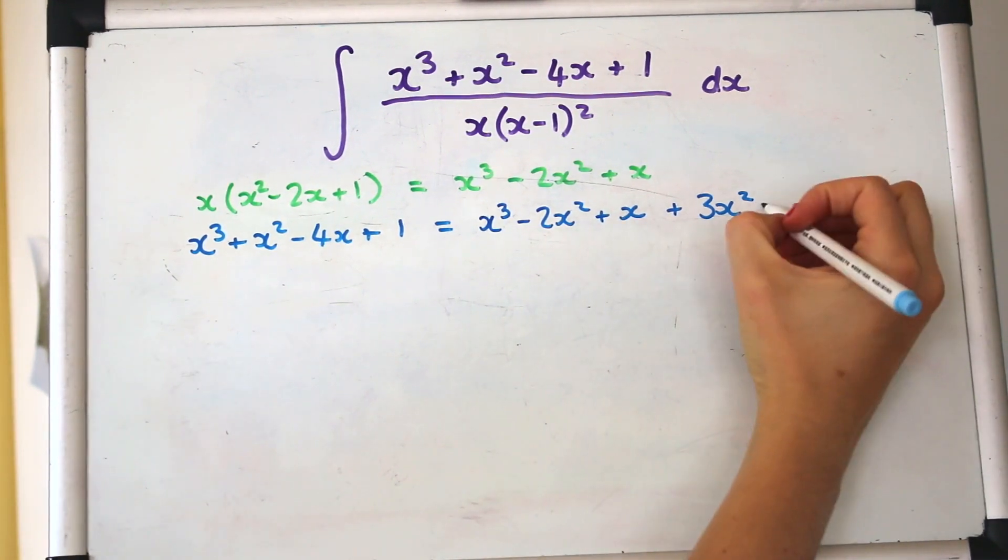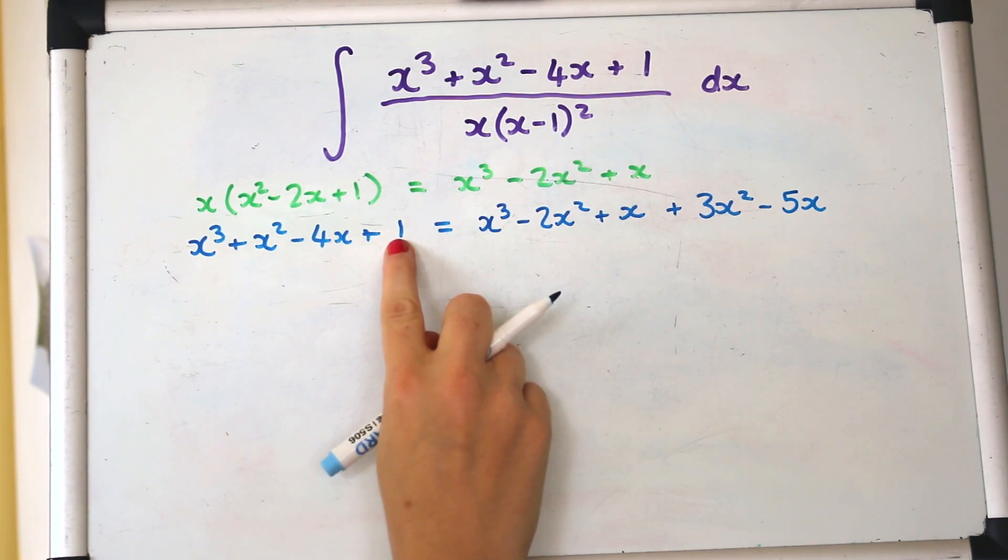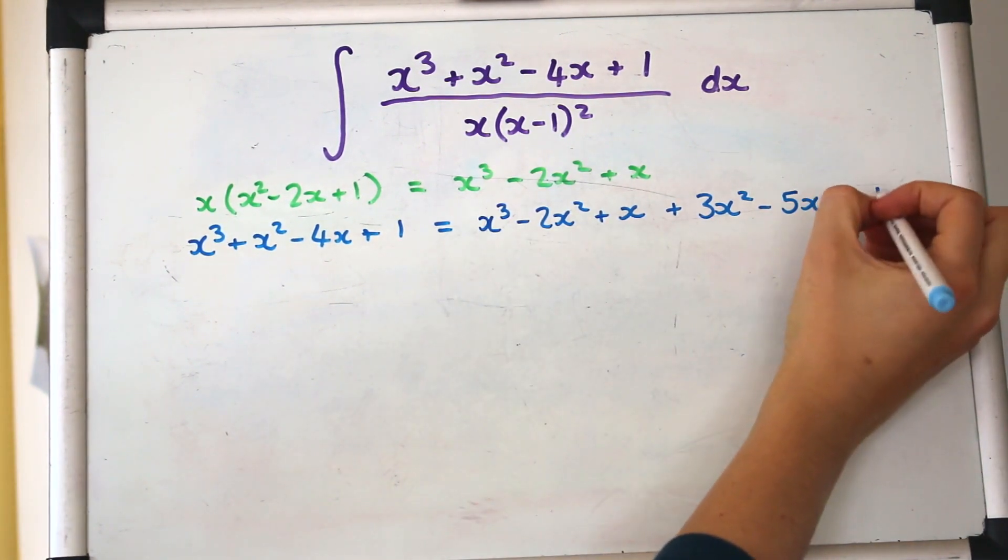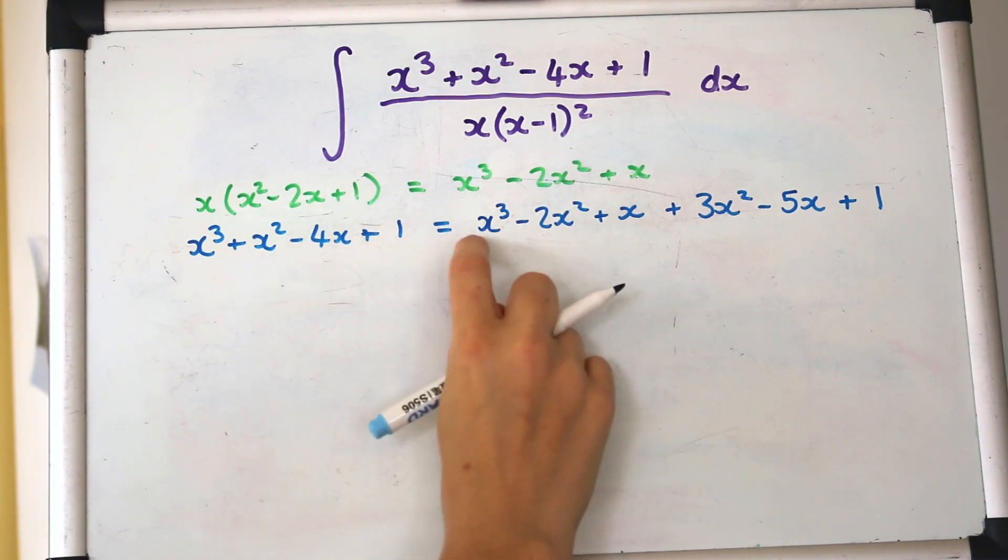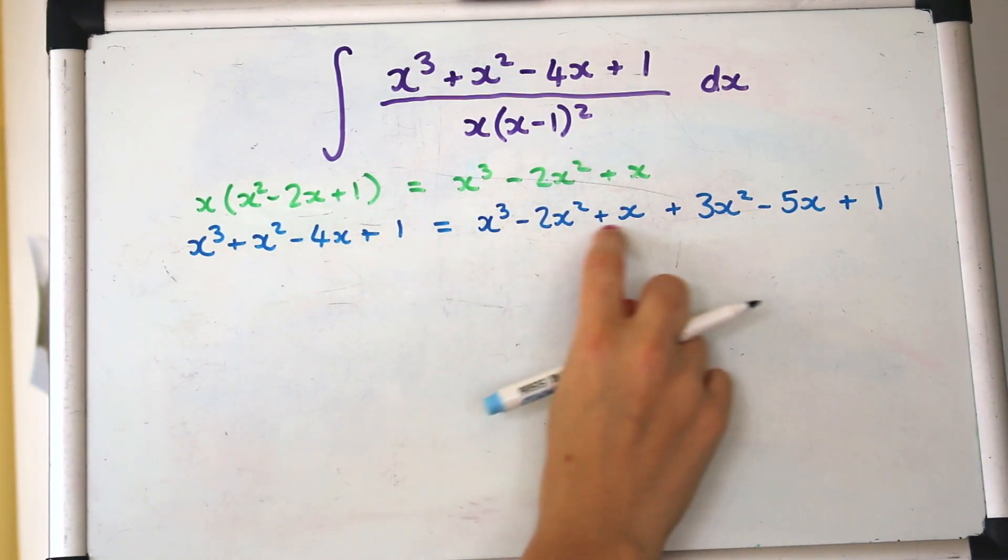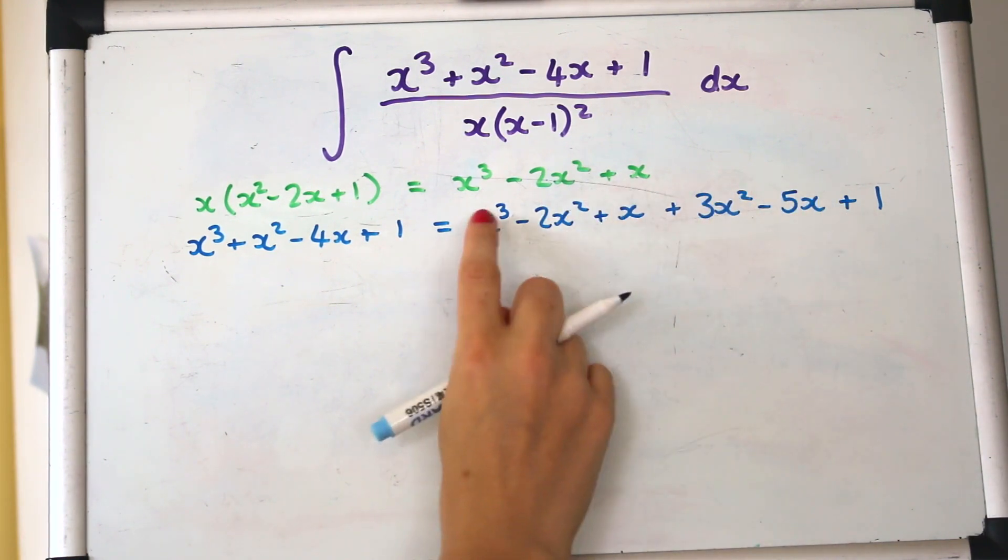We don't have x we've actually got minus 4x so we need to take off another 5x and we also need a plus 1.